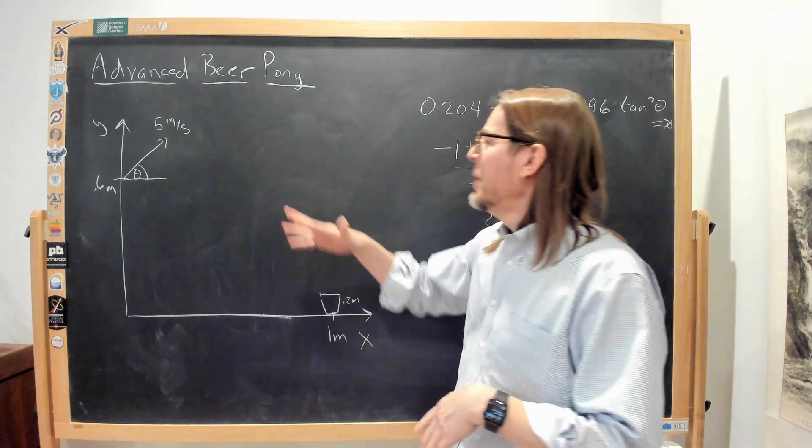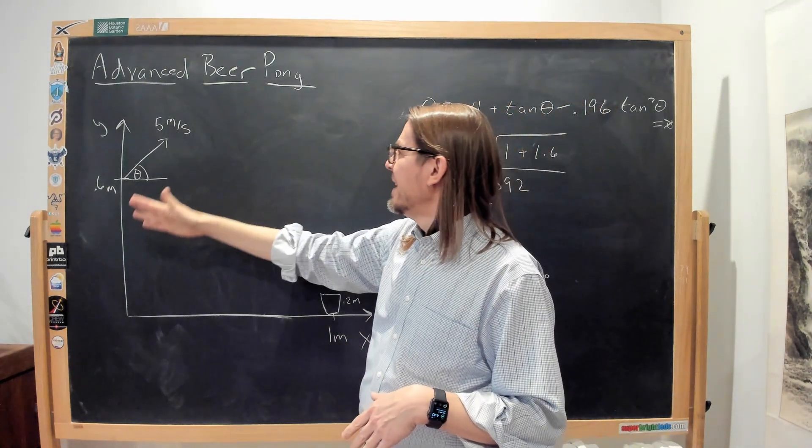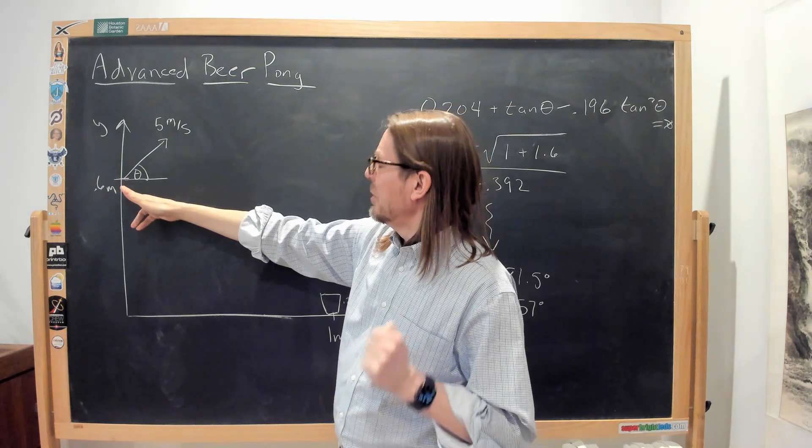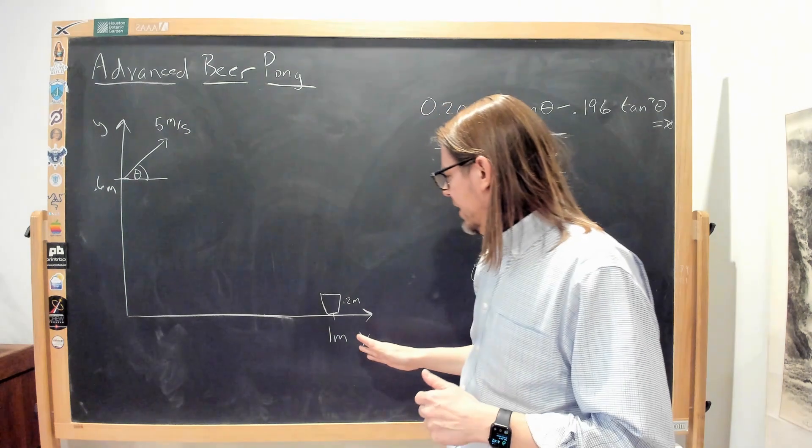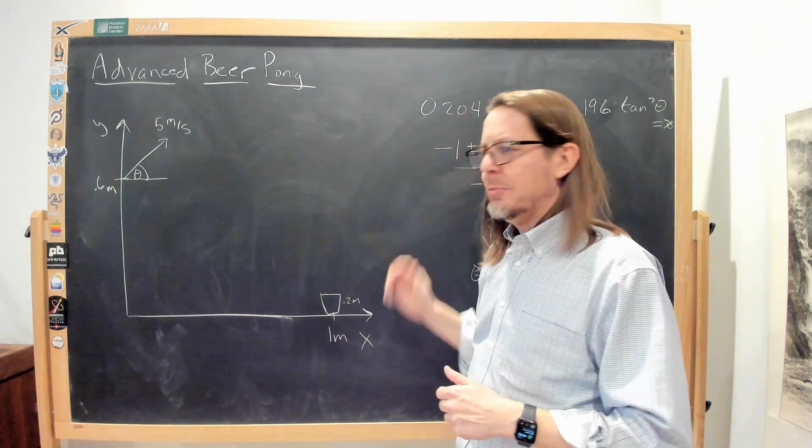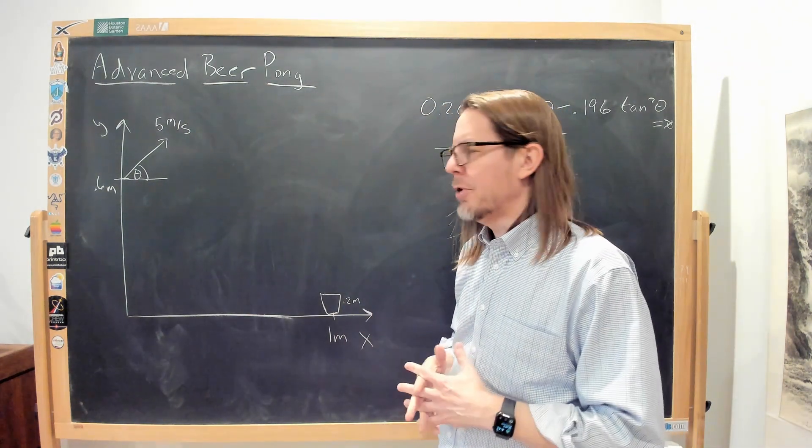All right, so you may recall this video. Perhaps you just watched it, and we had the idea that somebody was throwing the ball really hard, 5 meters per second at some angle, 0.6 meters high. They want to land it in this cup a meter away, 0.2 meter tall cup. Same problem.